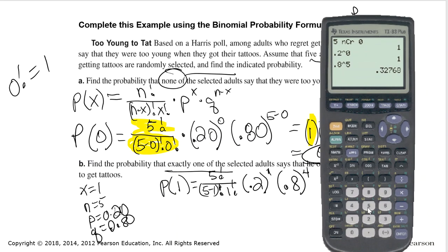And then using my calculator, I'm going to type that in. So the 5 math PRB to nCr. Use a 1 for x. That's going to give me a 5. 0.2 to the first should be 0.2. And then 0.8 to the fourth is going to give me 0.4096. Therefore,